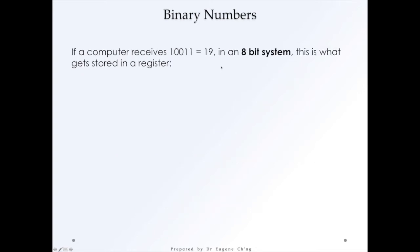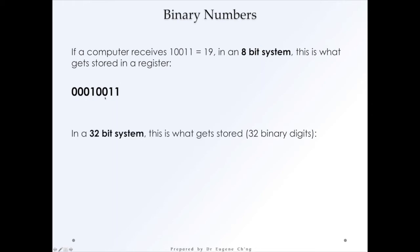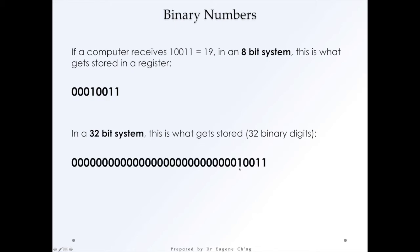Now if a computer receives a number — for example, in an 8-bit system — how do we store this inside an 8-bit system? This is what gets stored in the register in an 8-bit system. But if this is inside a 16-bit or 32-bit system, this is what gets stored. So the 19 occupies the least significant first five bits.